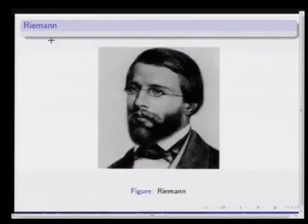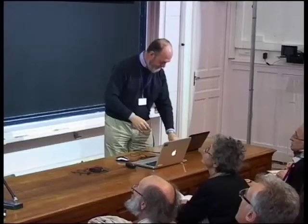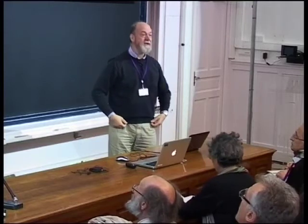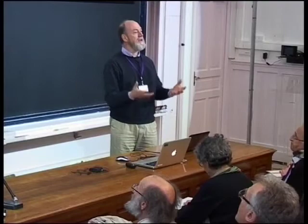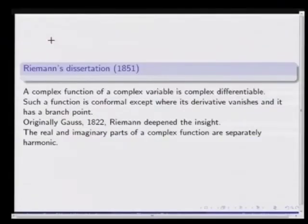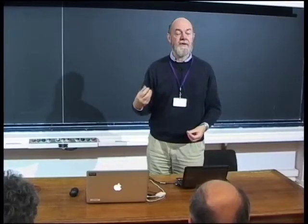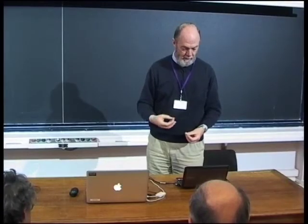We move immediately to Riemann and his dissertation of 1851, in which he defines — and it's still our definition — what it is for a function to be a holomorphic function: to be complex differentiable. He explains that these functions are conformal except where their derivative vanishes and it has a branch point. These ideas he would have taken from Gauss, who had made a study of conformal mappings in 1822 in which these ideas, without being so tightly connected to complex function theory, are there.